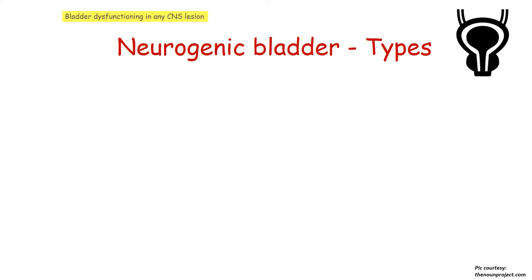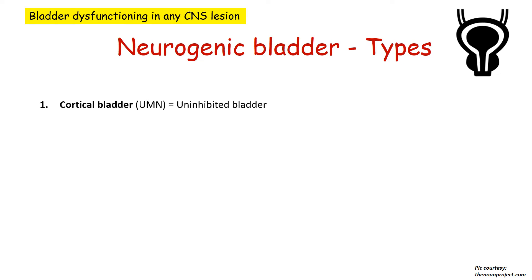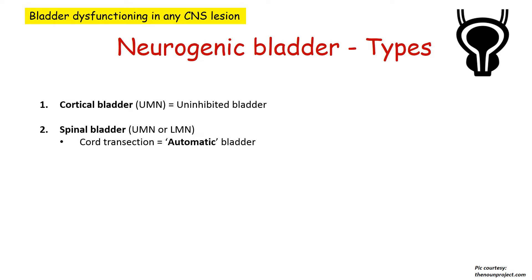Neurogenic bladder is basically dysfunction of the bladder in any kind of CNS lesion. It can be a cortical bladder, also referred to as an upper motor neuron type or uninhibited bladder, as the cortex exercises inhibitory control over the bladder. The spinal bladder can be either UMN or LMN depending on the site of lesion in the spinal cord. If the lesion is above T12 it will act as a UMN bladder, and if below T12 it will act as an LMN bladder. Cord transection above T12 leads to automatic bladder, and lesion in the reflex arc or cord transection below T12 leads to autonomous bladder.